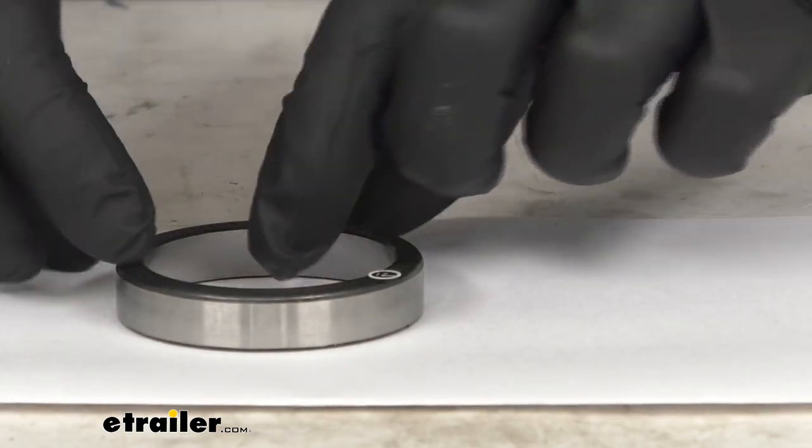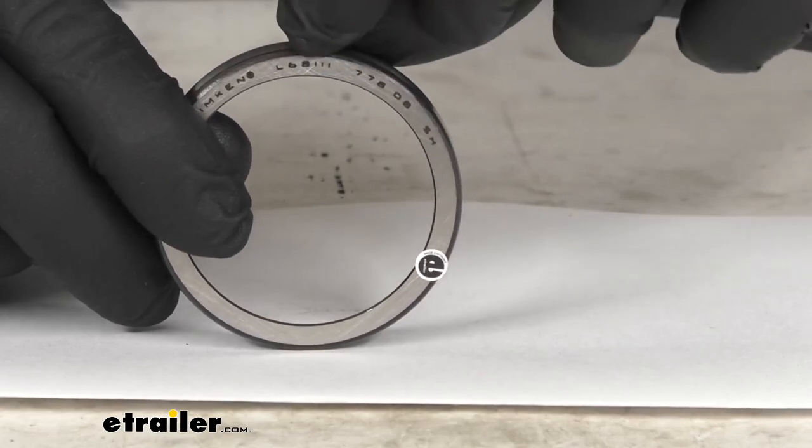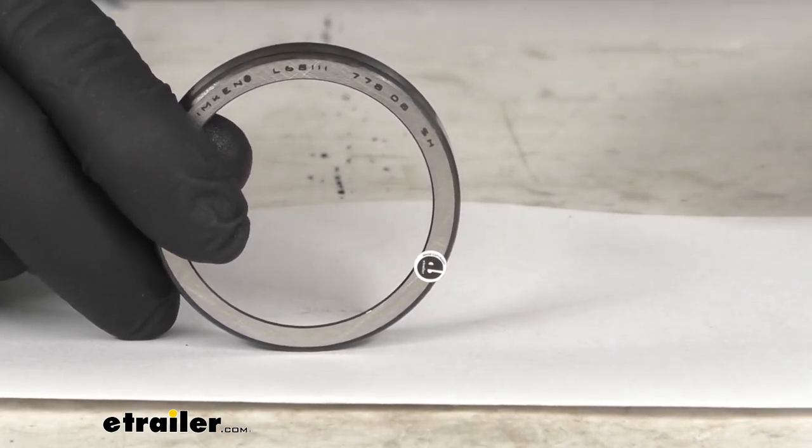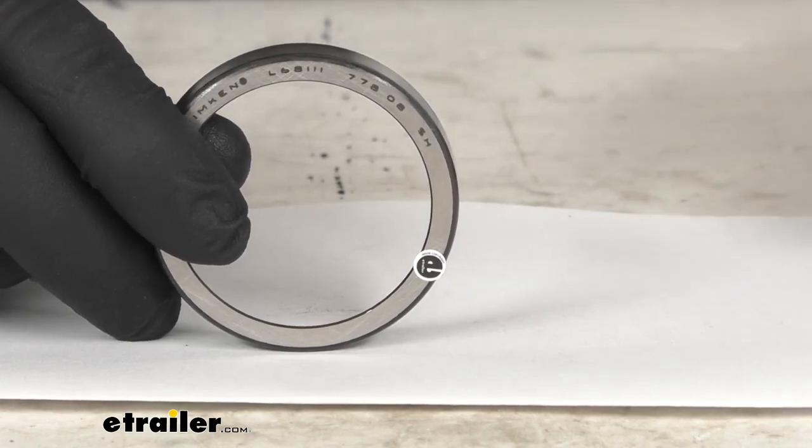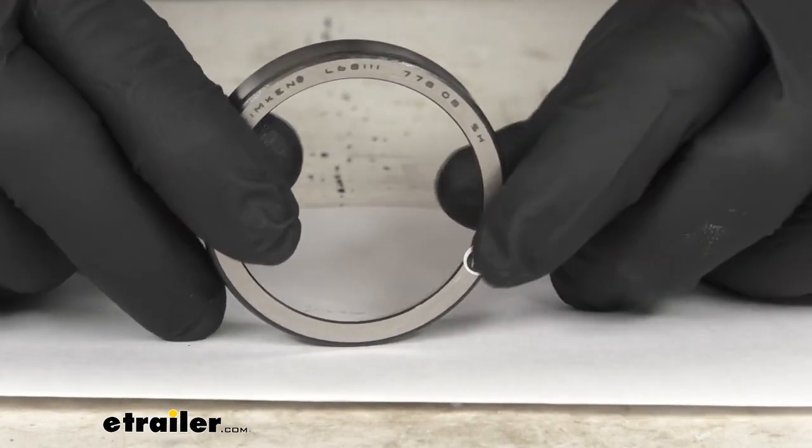But if you can find this number printed on your original race, this is going to make it much easier for you to verify that this is going to work for you.